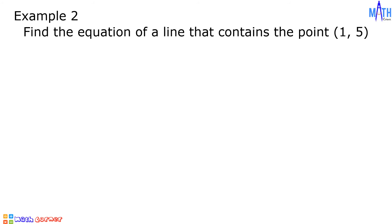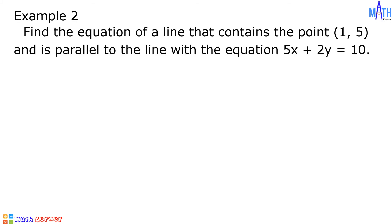Example number 2: let us find the equation of a line that contains the point (1, 5) and is parallel to the line with the equation 5x + 2y = 10. First, let us express 5x + 2y = 10 in slope-intercept form.